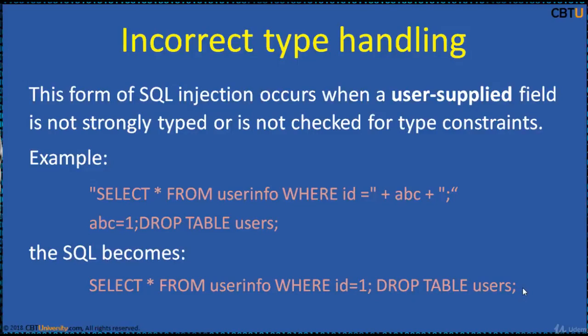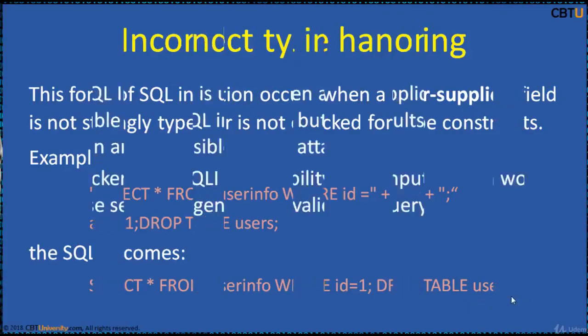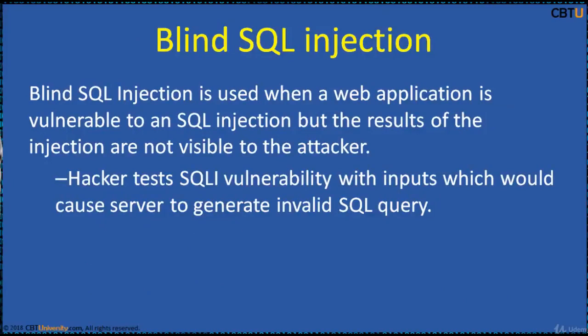This becomes SELECT * FROM userinfo WHERE id = 1; DROP TABLE users, which deletes the users table from the database and can have serious repercussions. Blind SQL injection (B-SQLI) is used when a web application is vulnerable to SQL injection but the results are not visible to the attacker. The attacker tests SQL injection vulnerability with inputs that would cause the server to generate invalid SQL queries. This attack type is time-intensive because a new statement must be crafted for each bit recovered, and the attack may consist of many unsuccessful requests. Several tools can automate these attacks once the vulnerability location and target information are established.